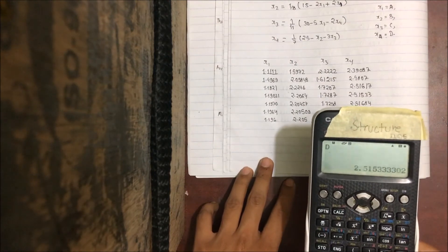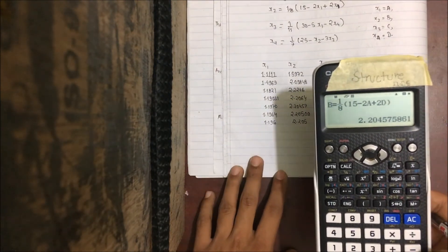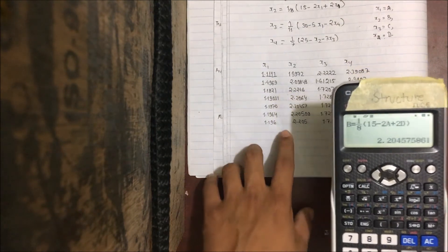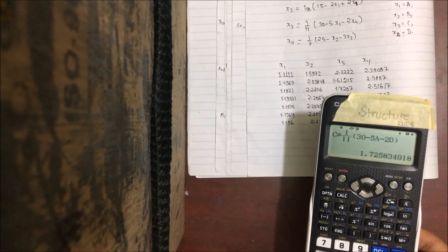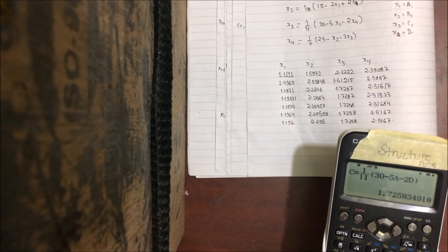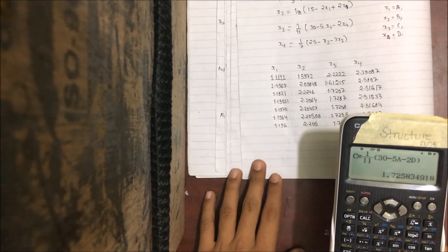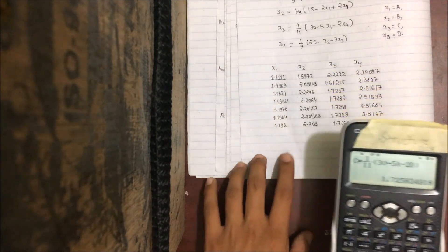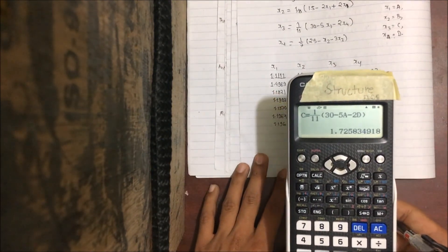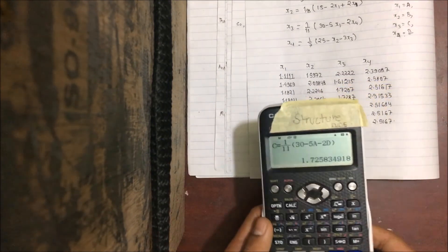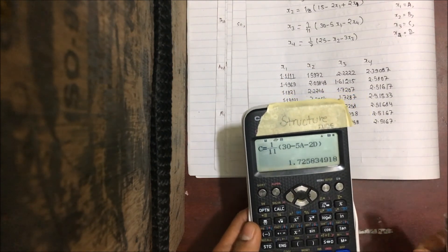In this way, the Gauss-Seidel method can be done using a calculator within a few minutes. The basic difference between Gauss-Seidel and Gauss-Jacobi is that in Gauss-Seidel, you use recently obtained values, while in Gauss-Jacobi, the first iteration value is used in the second iteration. You can use a calculator to solve problems efficiently.